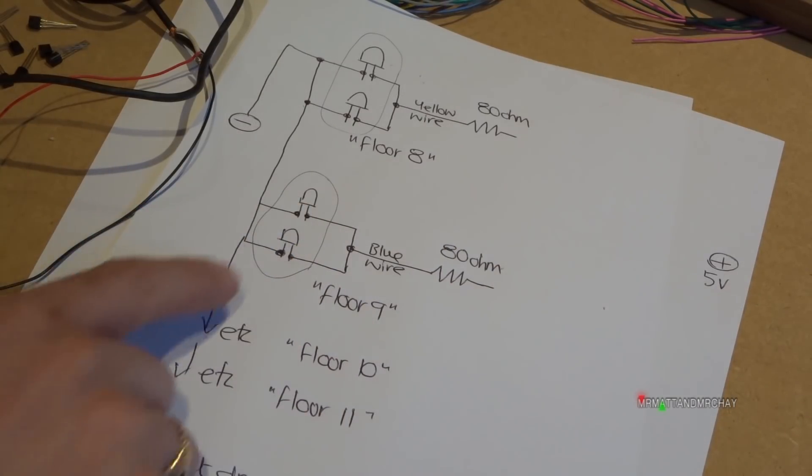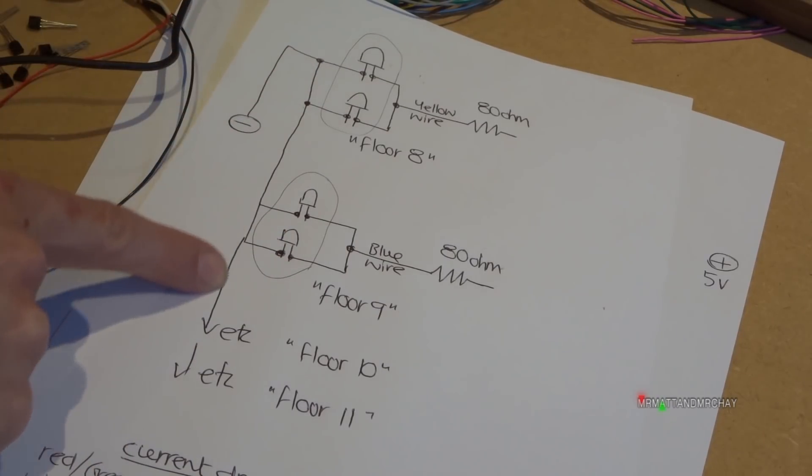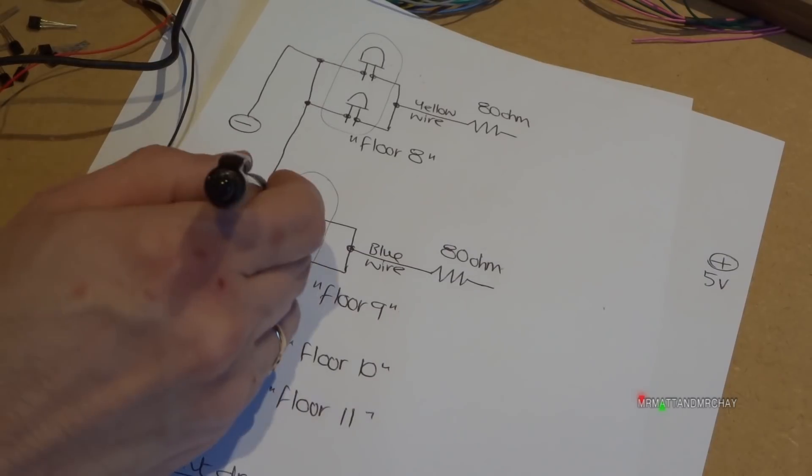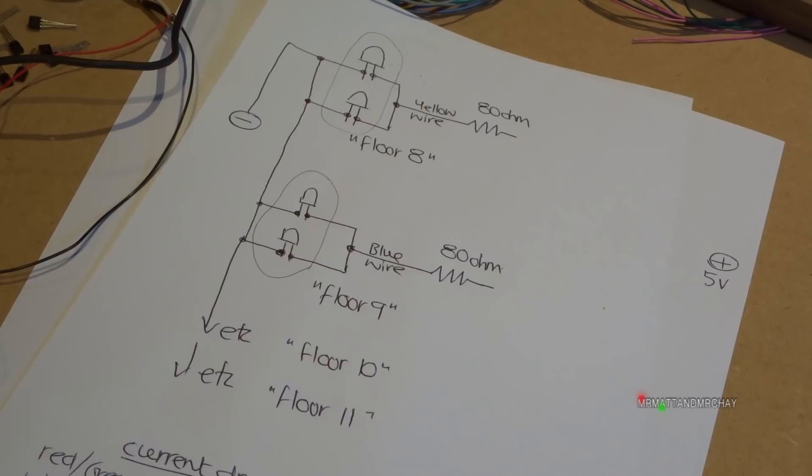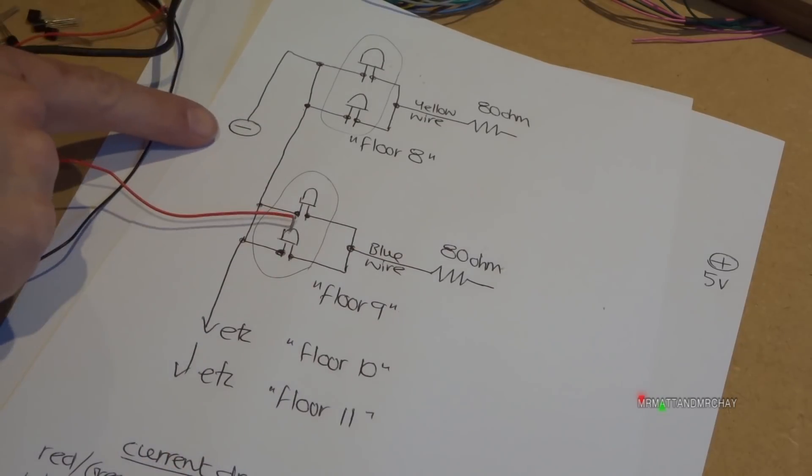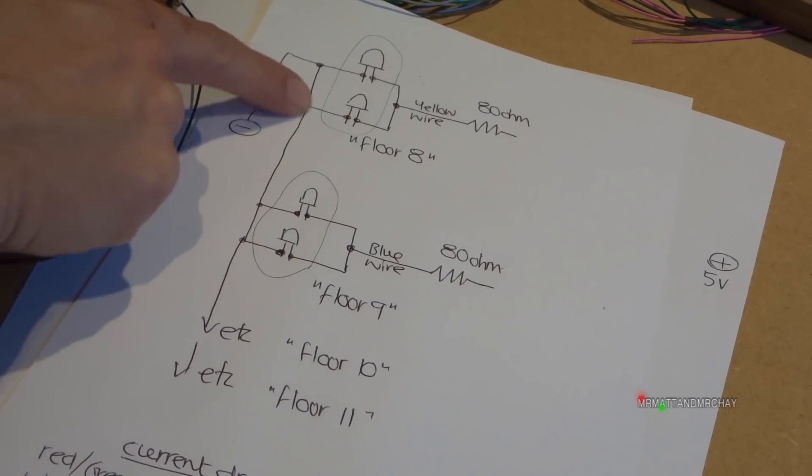Now all the wiring down this side is called the common wire. This joins to all of the LEDs and it's wired back to the negative. The wiring on these boards for all the LEDs, this is only showing like two examples here, like the eighth floor and the ninth floor.